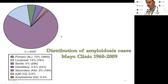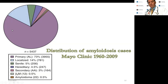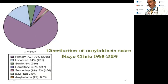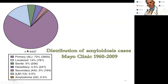A large series from the Mayo Clinic — over 5,000 patients — shows the distribution of various subtypes. The Mayo Clinic is essentially the mecca for AL amyloid in the country. About 73% of their patients with amyloid, granted it's a referral center, were the AL subtype — the vast majority.